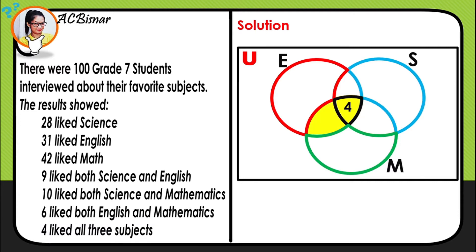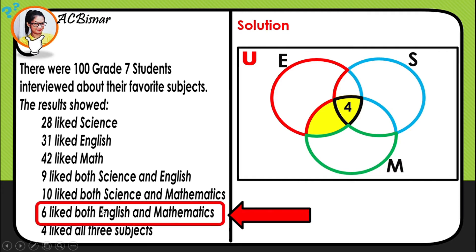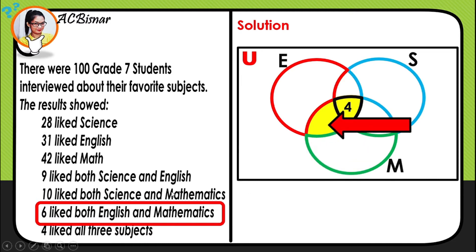Next, we look for students who like both English and mathematics. The given value is 6. Since we already have 4 in the center, we subtract: 6 minus 4 gives us 2. We write 2 in the English-Math intersection region.